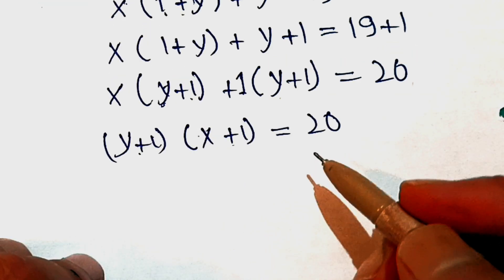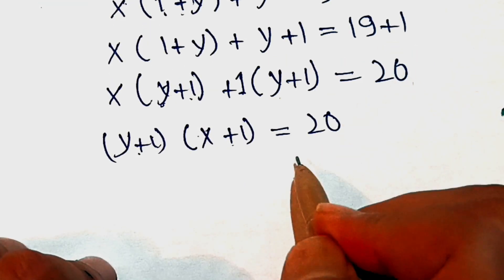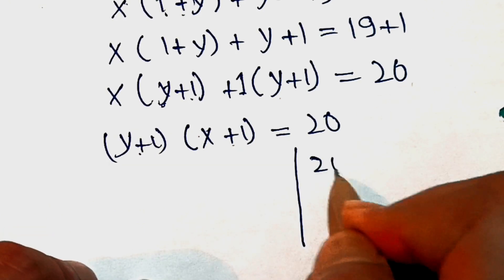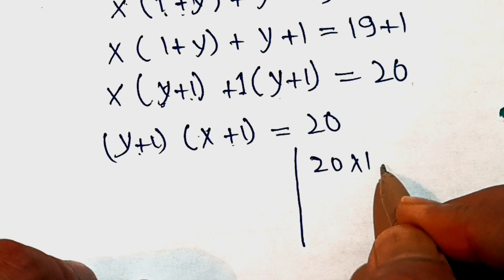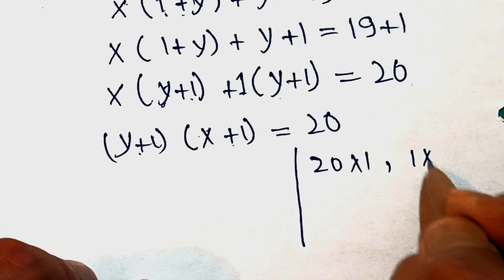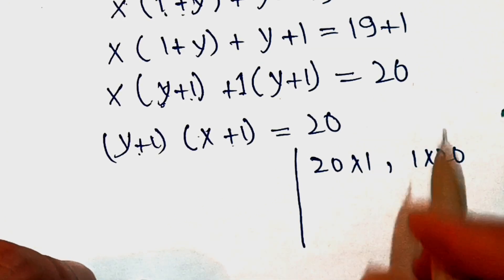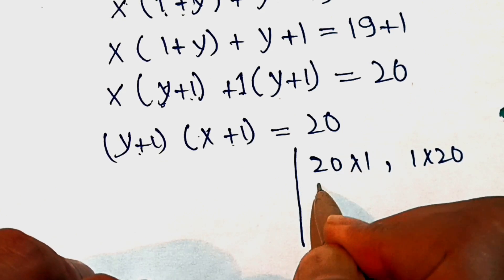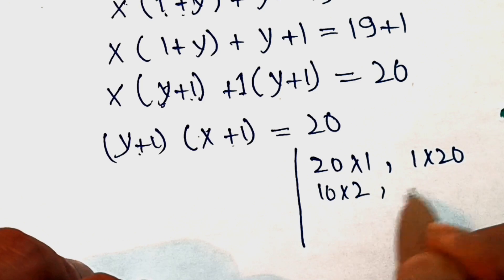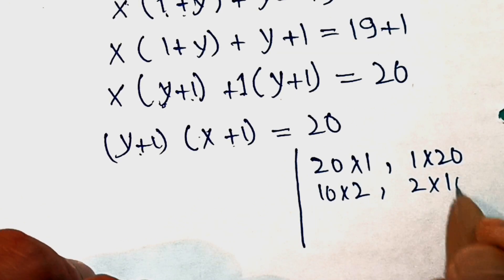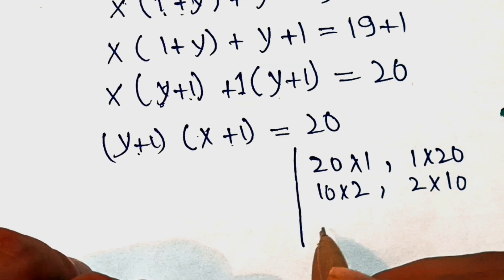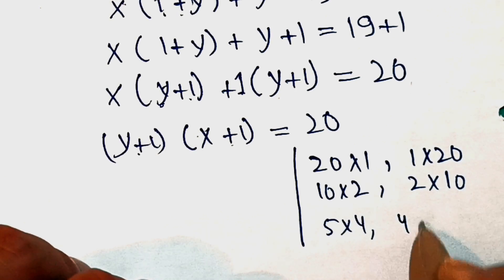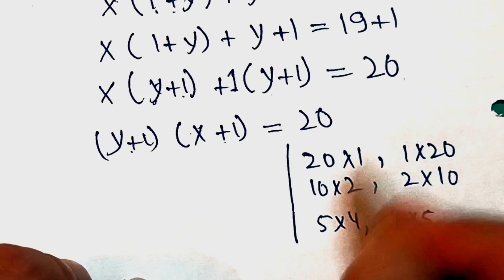The product of these two factors equals 20. The factorizations of 20 are: 20 into 1, 1 into 20, 10 into 2, 2 into 10, 5 into 4, and 4 into 5. So these give us three distinct cases.